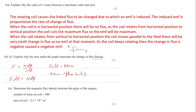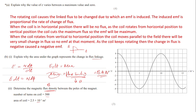Determine the magnetic flux density between the poles of the magnet. The number of turns is 500 and the coil area is 2.5 × 10⁻³ m². Since area under the graph equals flux linkage (BAN), we use the graph to count boxes. Looking at the first quarter of the motion on the graph, counting boxes gives approximately 6.5 boxes.